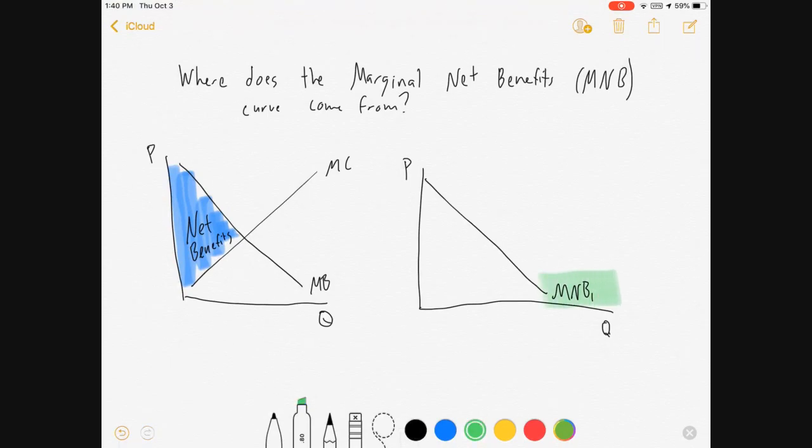The net benefits overall is the total amount of all benefits that have outweighed costs. Now the marginal net benefits curve, this thing along here, is measuring how much net benefits we get per transaction. So basically it's measuring for any given quantity the distance between our marginal benefits curve and our marginal cost curve.